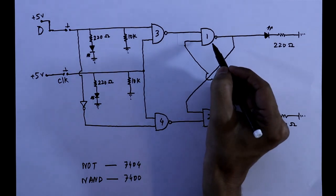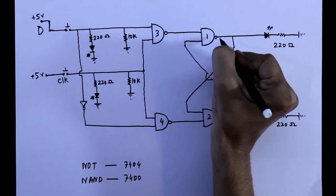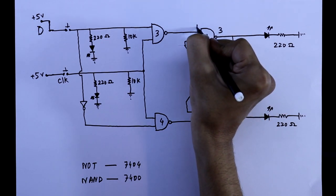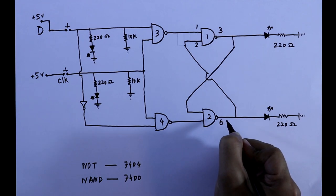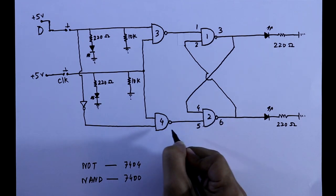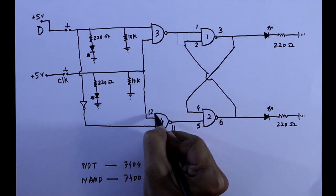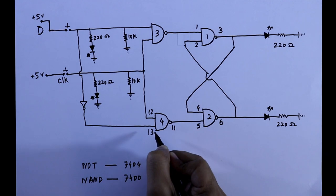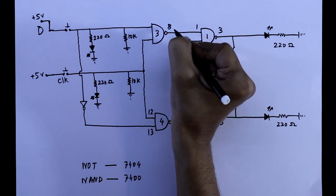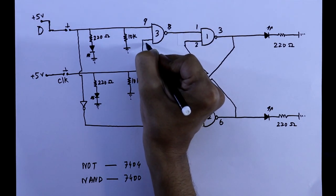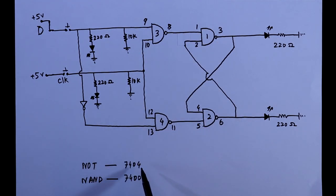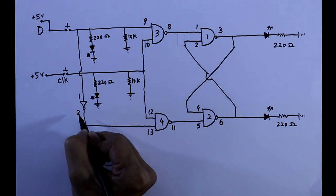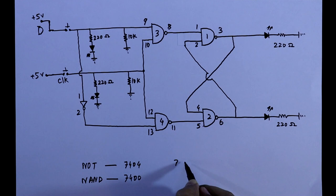As we know for gate 1 of 7400 the output is pin 3 and these are the two inputs, pin 6 and 4, 5. For gate 2, it is pin 11 and the inputs are 12 and 13. For gate 3 the output pin is pin 8 and the inputs are 9 and 10. And for the IC 7404 it is pin 1 and pin 2. For these two ICs, pin 7 should be connected to ground and pin 14 should be connected to plus 5 volt. So this is the connection. Now we will see this on breadboard.